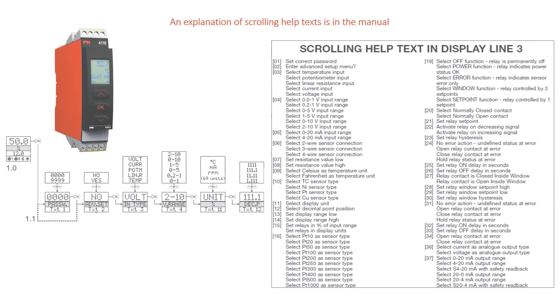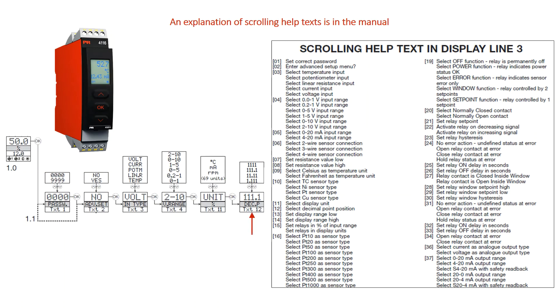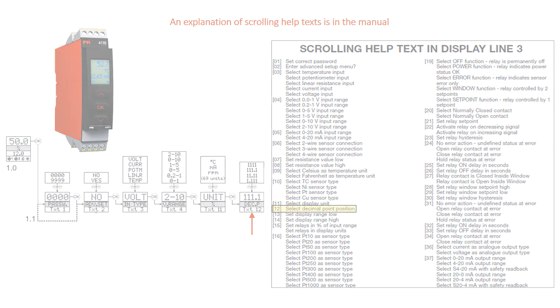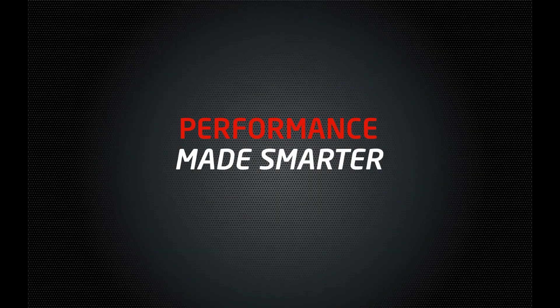In the routing diagram, each menu has an associated text number. For example, this menu has the reference text 12. In the manual there is an overview of all configuration help texts, which help explain what each menu means.